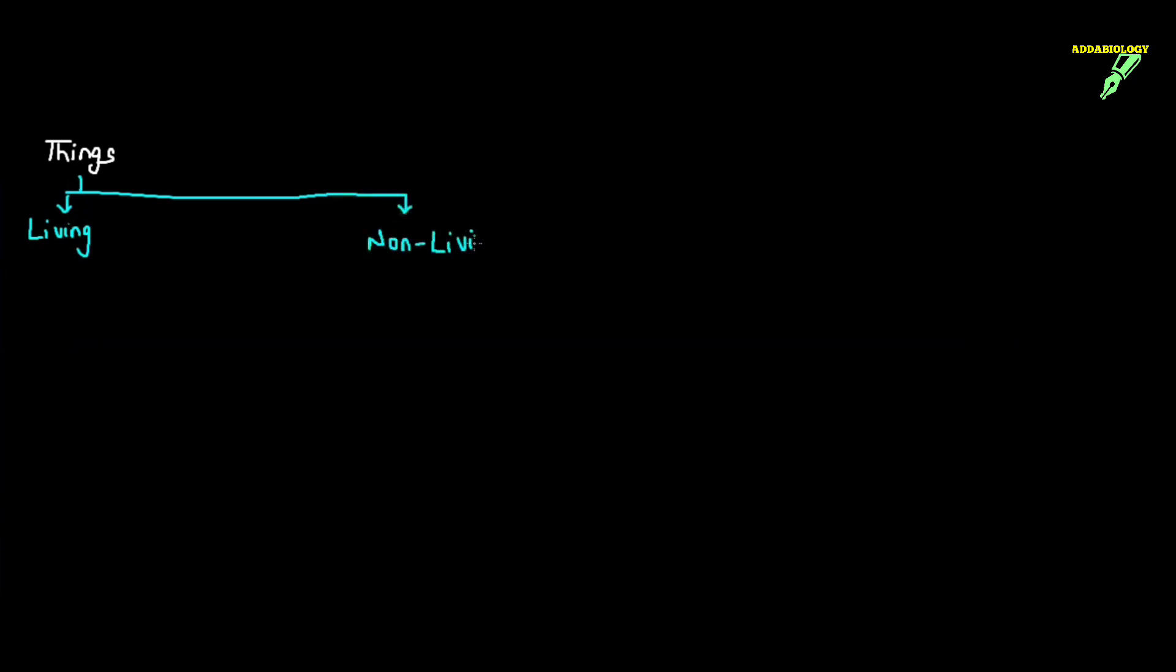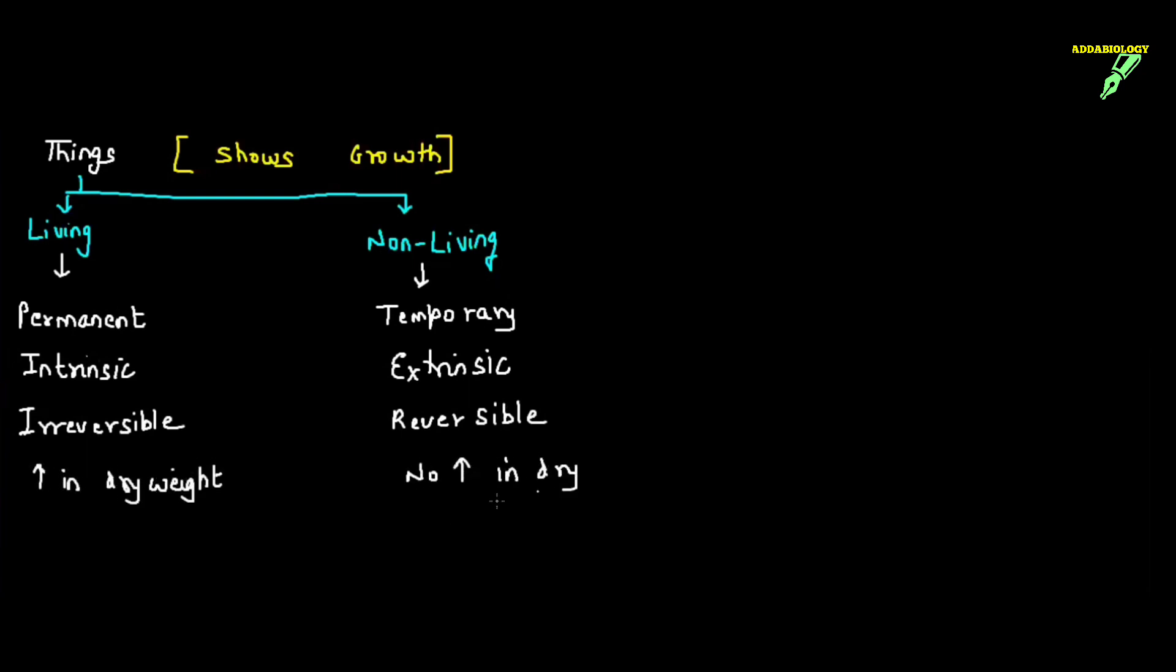When we talk about things, there are two types: living and non-living. Now if I ask you which one will show growth, remember that both living and non-living things will show growth. The only difference is in living things the growth is permanent, intrinsic, and irreversible. In non-living things it is temporary, extrinsic, and reversible. In case of living things, there is increase in dry weight. But in non-living things there is no such increase. When I say living thing, for example a seed becoming a tree. But when I say non-living thing, small rocks joining together to form a big mountain, and this mountain can be again broken down into rocks.